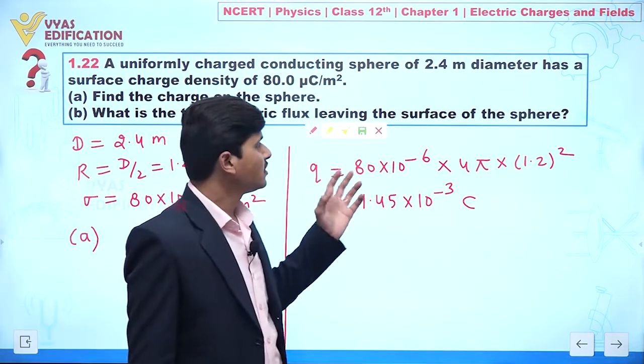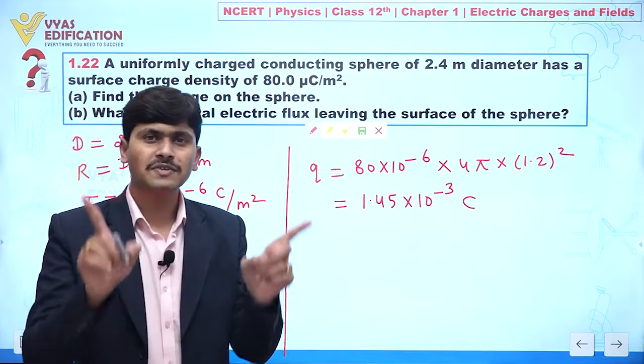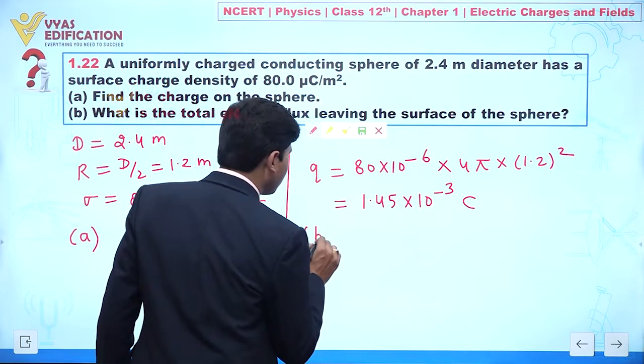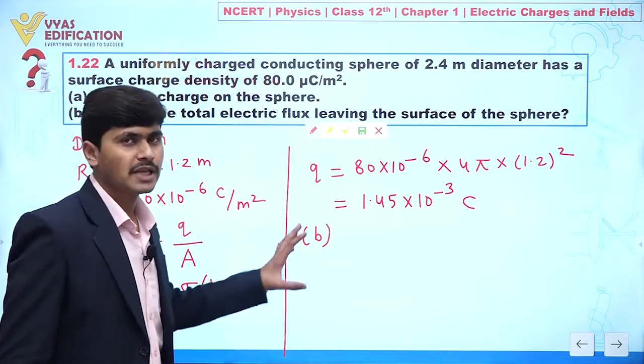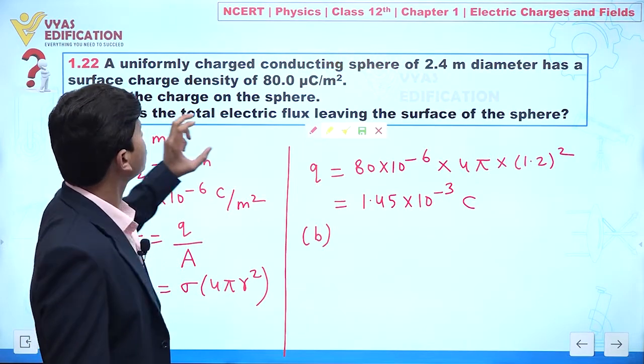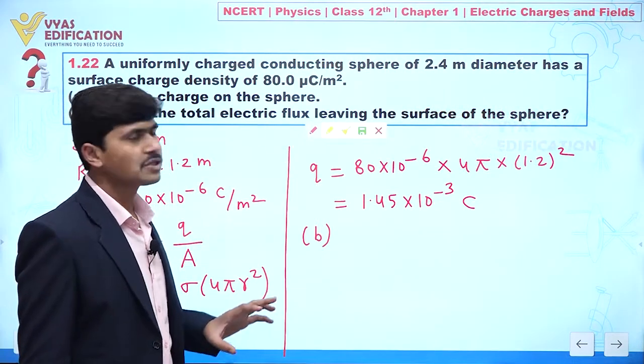So this is value of charge that is present on the surface of the sphere. Now we are going to solve option number B. Question number B is given to you - what is total electric flux leaving surface of the sphere?